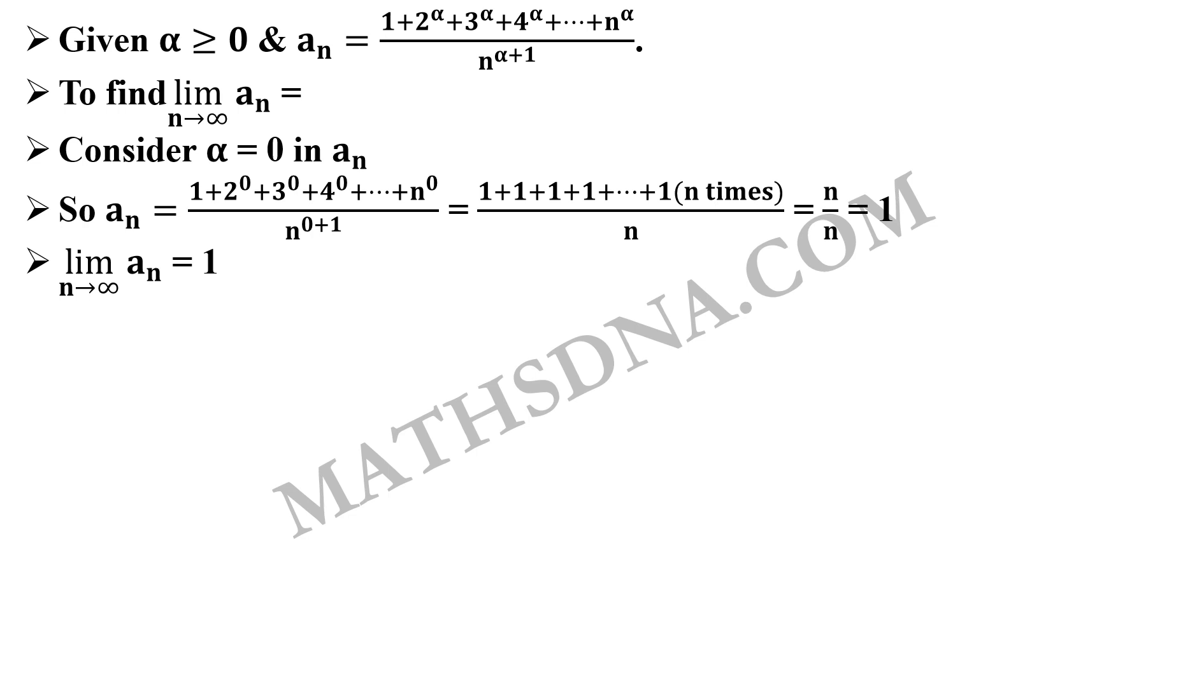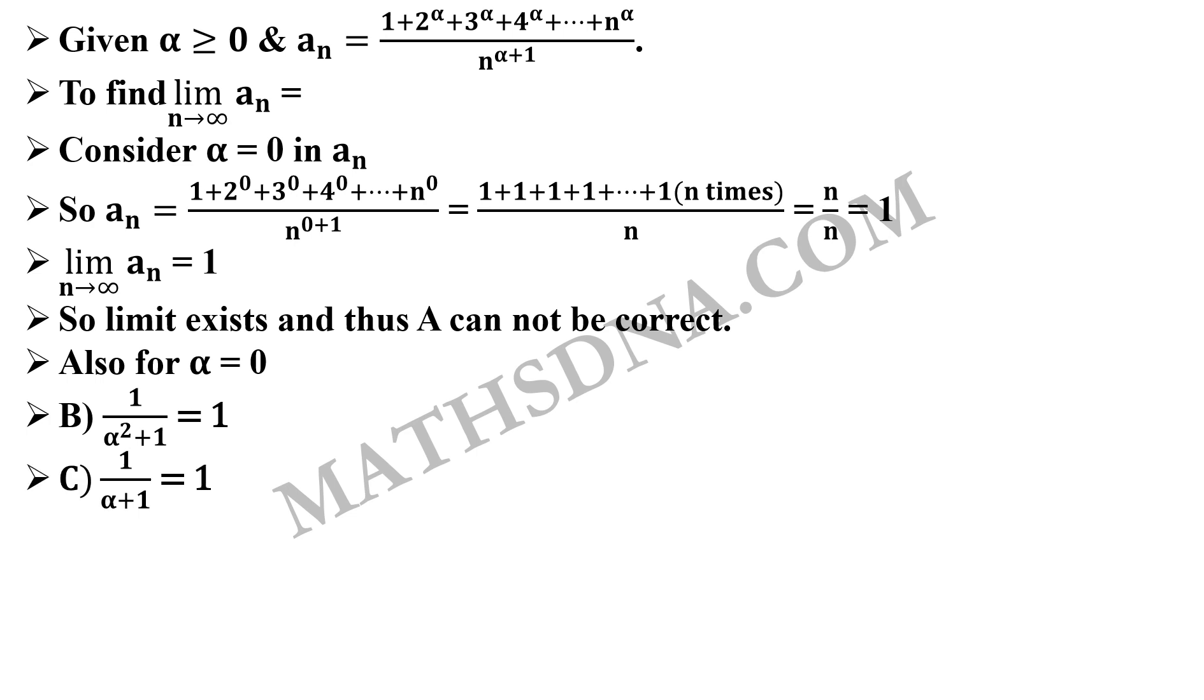Now when you apply limit n tends to infinity to our a_n it gives the answer as 1. This is when you selected alpha equals to 0. From this we get that option a is not correct because limit exists but also for alpha equals to 0 the value of b that is 1 upon alpha square plus 1 will be equals to 1. The value of c, 1 upon alpha plus 1, will also be equals to 1 and value of d, 1 upon alpha square plus alpha plus 1, will be equals to 1. All the three options are true.